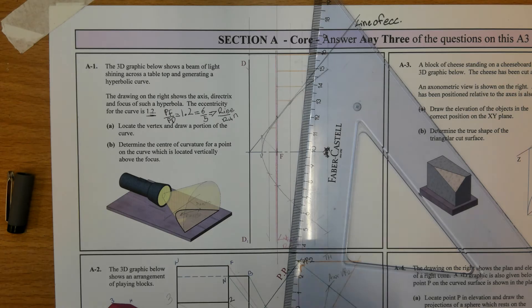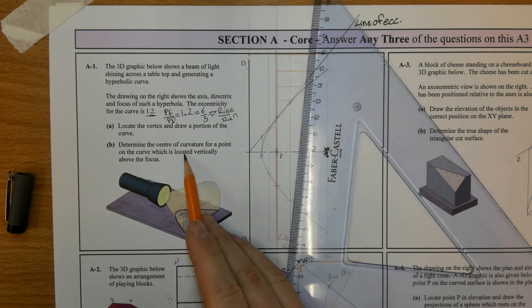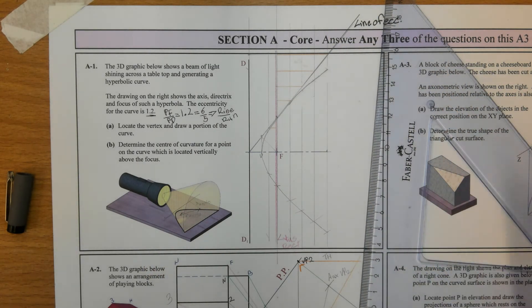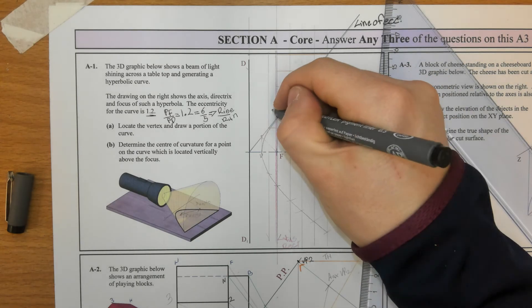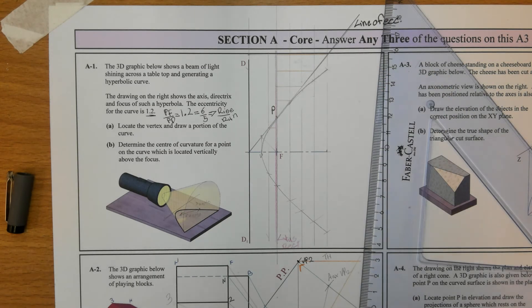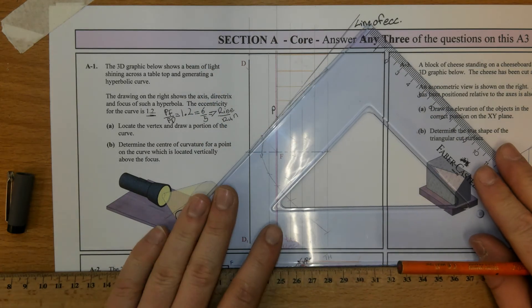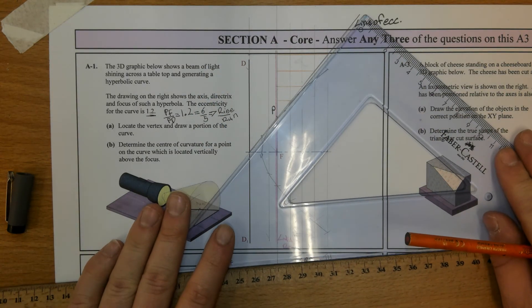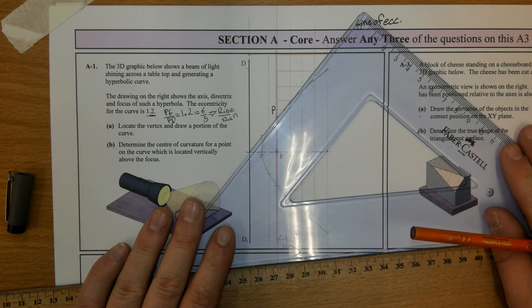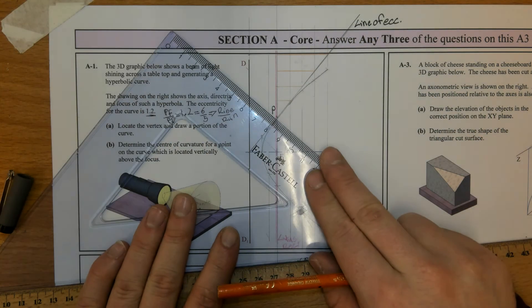The next one is determine the center of curvature for a point on the curve which is located vertically above the focus. So, this one here. These are hard to learn for students. At point P, we're going to draw a line perpendicular to the tangent, a.k.a. the line of eccentricity.